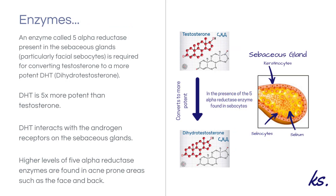An enzyme known as 5-alpha-reductase is found specifically in the sebaceous glands. This 5-alpha-reductase enzyme is responsible for converting testosterone to the more potent dihydrotestosterone, or DHT. DHT is five times more potent than testosterone and interacts with the androgen receptors, resulting in more sebum production. The 5-alpha-reductase enzyme is found in higher levels in acne-prone areas such as the face and the back.